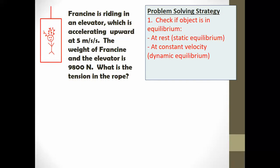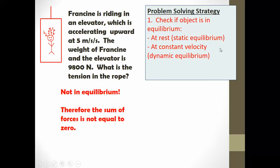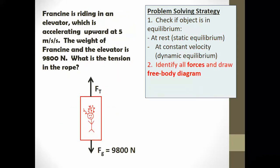For Francine's problem, we first check: is the object in equilibrium at rest or constant velocity? The answer is no, so the sum of forces is not equal to zero. Now we identify all the forces and draw a free body diagram. The forces are the force of tension holding Francine up and the force of gravity pulling her and the elevator down at 9,800 newtons.